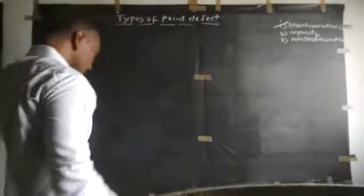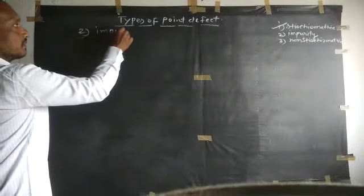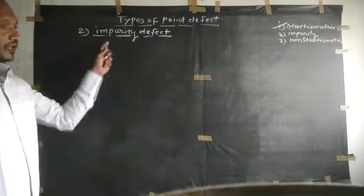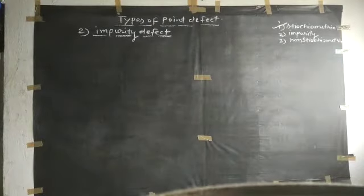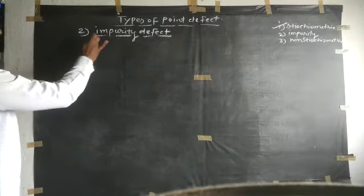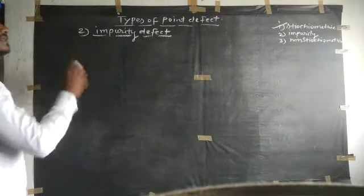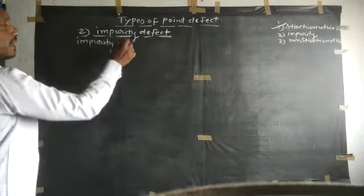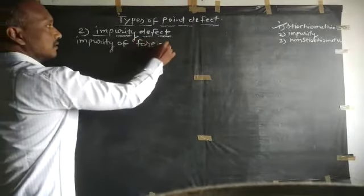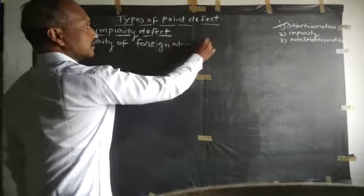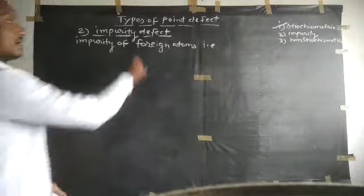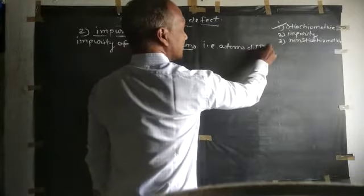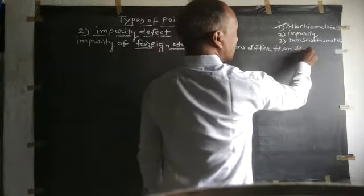The second type is the impurity defect. What is the impurity defect? It means in this defect, impurity is added — the impurity of foreign items. What are foreign items? The foreign items are items different from the host items.